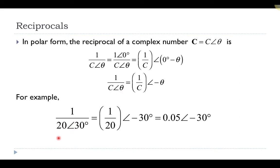For example, if I wanted to take 1 over 20 with an angle of 30, I would take 1 over 20, and then my angle would be just the negative of the angle of the complex number, which would be negative 30. 1 over 20 is 0.05, and then the phase or the angle would be negative 30. So 1 over 20 with an angle of 30 is equivalent to 0.05 with a phase angle of negative 30.